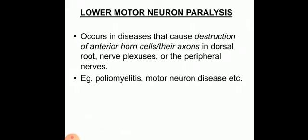Lower motor neuron paralysis is basically a disease which causes destruction of the anterior horn cells of the spinal cord, their axons which are present in the dorsal root, the nerve plexus, or the peripheral nerves. You can see lower motor neuron paralysis in poliomyelitis, motor neuron diseases, and others — at least remember these two important ones.